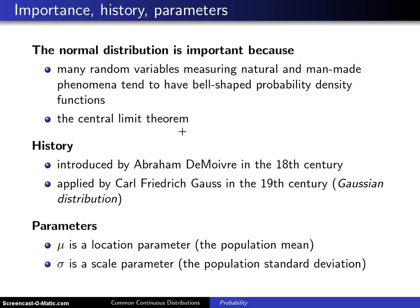In terms of history, the normal distribution was introduced by Abraham de Moivre in the 18th century, but then in the 19th century it was applied by Carl Friedrich Gauss, and some textbooks will call the normal distribution the Gaussian distribution, named after Gauss. There are two parameters in the normal distribution.